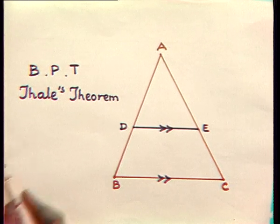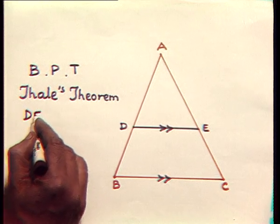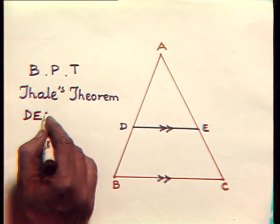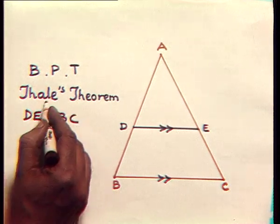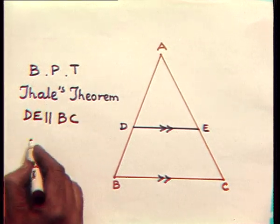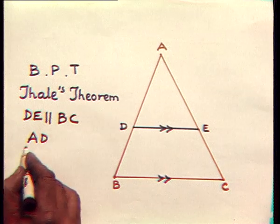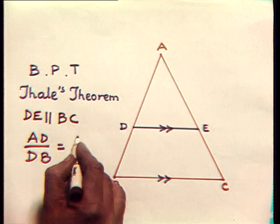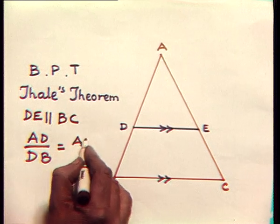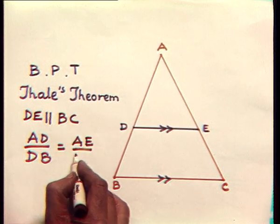Here DE is parallel to BC. So, according to Thales' theorem, AD upon DB will be equal to AE upon EC.